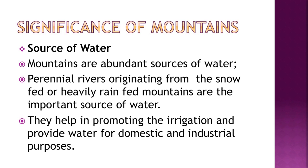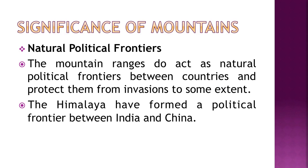Rivers originating in the high mountain region bring sediment deposits along with water to the lower valleys, helping in the formation of fertile plains such as the great Northern Plains — Ganga, Sutlej and Brahmaputra of India. As a result, the states of Punjab, Haryana, Uttar Pradesh, Bihar and West Bengal are very rich in agriculture. Mountain ranges also act as natural political frontiers between countries, protecting them from invasions. The Himalayas have formed a political frontier between India and China.